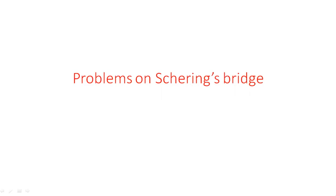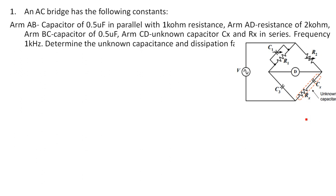In this video I am going to explain how to calculate the unknown values of capacitance and resistance for the Schering bridge. In the last video I explained the Schering bridge concept - how to calculate the unknown capacitance and resistance. We derived the bridge balance equations for Cx and Rx, and also calculated the dissipation factor. Now we will solve problems related to the Schering bridge.